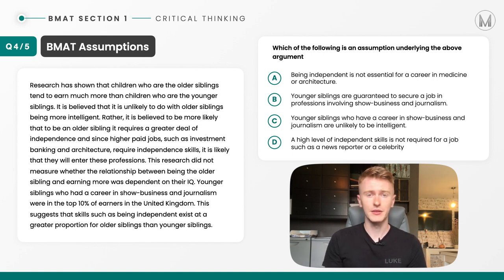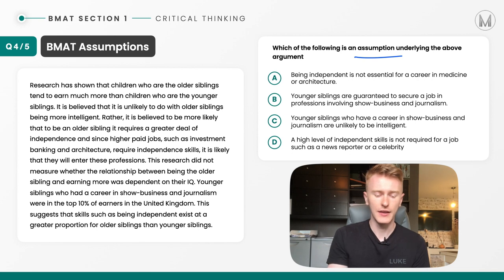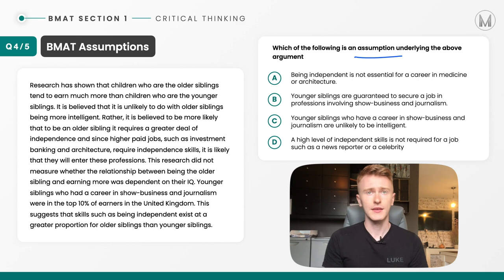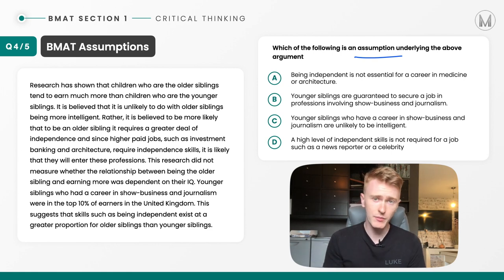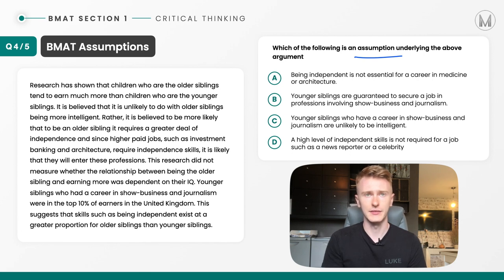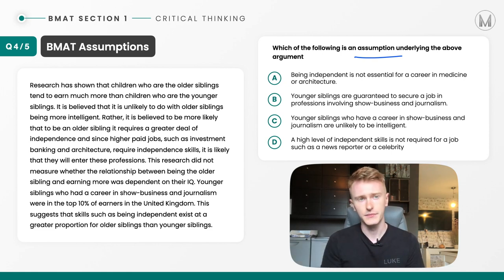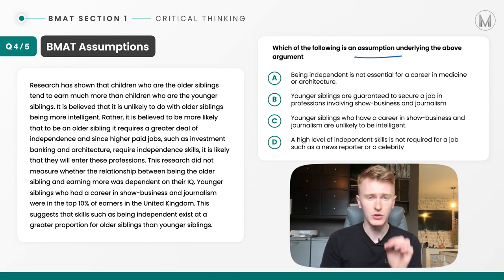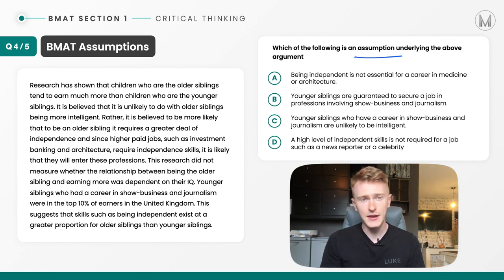Let's work through question four together. This question is about the position of older siblings versus their younger counterparts. There's a link between being independent and particular jobs such as investment banking and architecture, predominantly in older siblings because they seem to be more independent, and they tend to earn much more than younger siblings. The research did not measure whether the relationship between older siblings and earning more was dependent on IQ. Younger siblings who had a career in show business and journalism were in the top 10% of earners in the UK — they seem to be exceptions. The conclusion is that skills such as being independent exist at a greater proportion in older siblings than younger siblings.